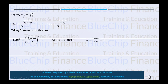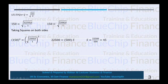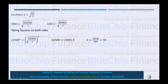We apply the EOQ formula with Q = 150 (changed from 100), D = 250, and H = 1, solving for S. Squaring both sides, 150² = 22,500 equals 500S, so S = 22,500 / 500 = $45. The ordering cost must be $45 for an order quantity of 150 to be optimal.